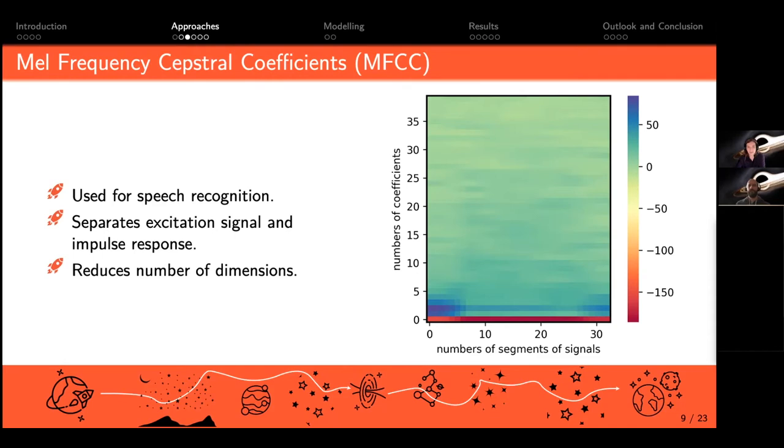What makes it so special is that it separates the excitation signal from the impulse response, or in other words, the spectral envelope from the spectral detail. This is what you can see on the bottom image—there's this huge red line which is the envelope, while the rest is the detail. This is why they differ so much in their values. Another advantage is that it reduces the number of dimensions.